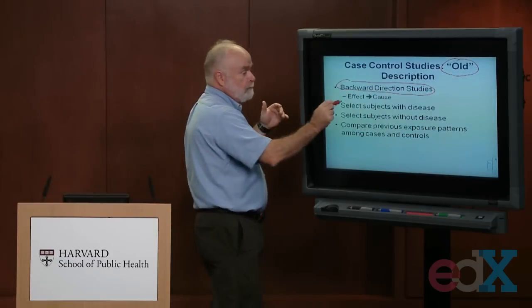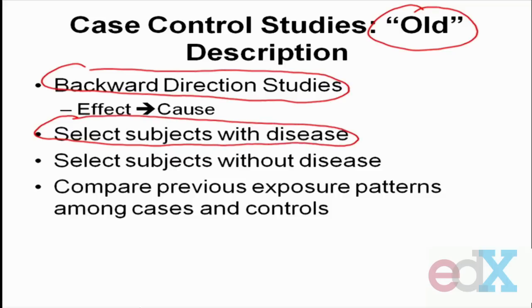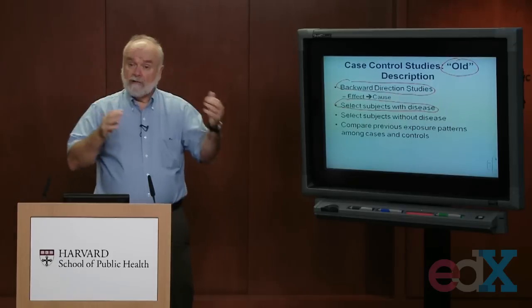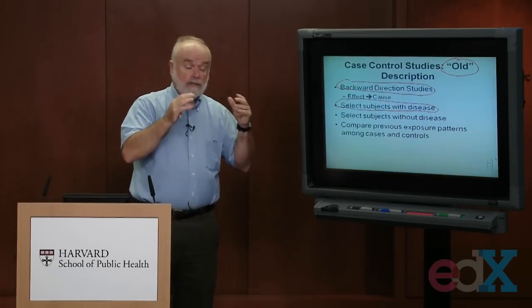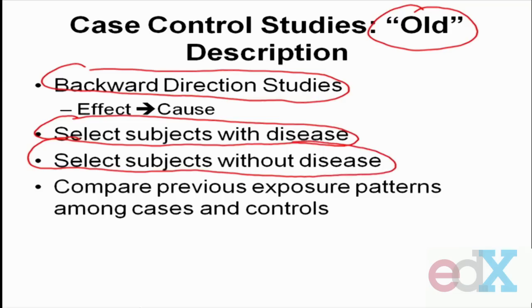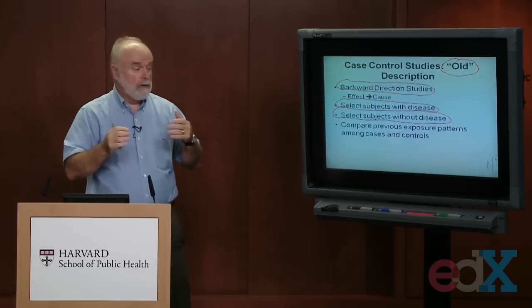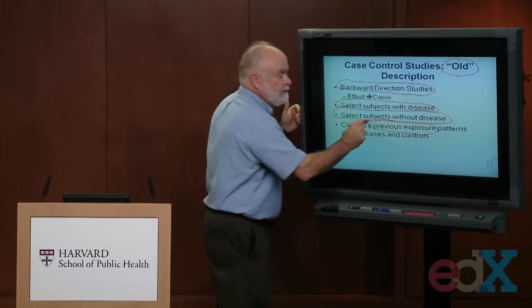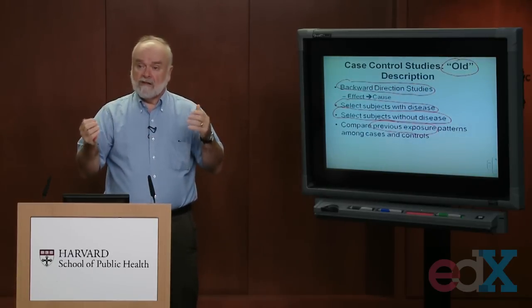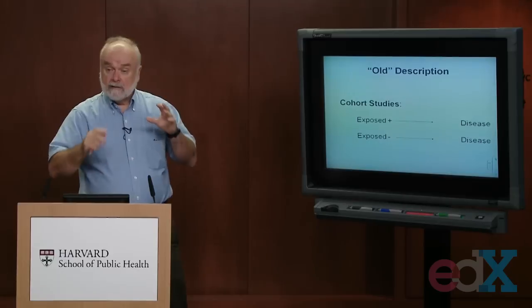This is opposite to what we did in cohort studies. The Framingham Heart Study eliminated up front anyone who already had cardiovascular disease, because if you already had it in 1950 you were no longer at risk for a first case. Case control studies are the opposite — we start with people who already have disease. In this old description, we'd also enroll people who don't have disease and ask both groups about the past 20 years: did you smoke or not? We're comparing previous exposure histories among cases and controls — that's the backwards direction.